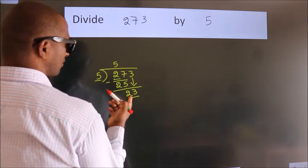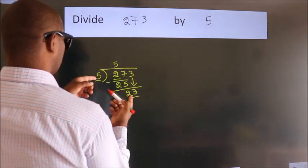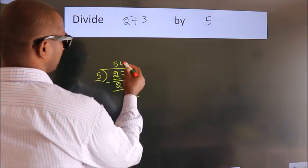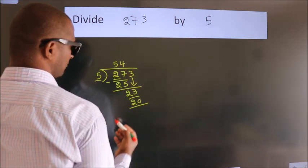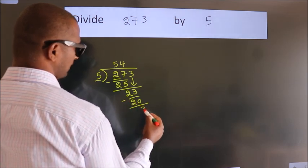A number close to 23 in the 5 times table is 5 times 4, which is 20. Now we subtract and get 3.